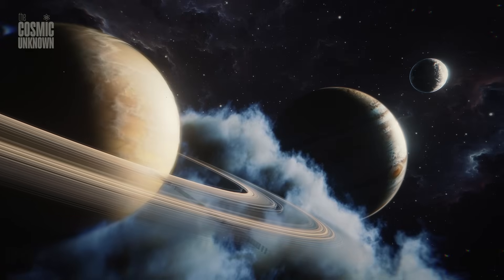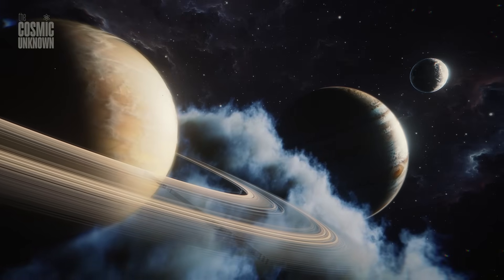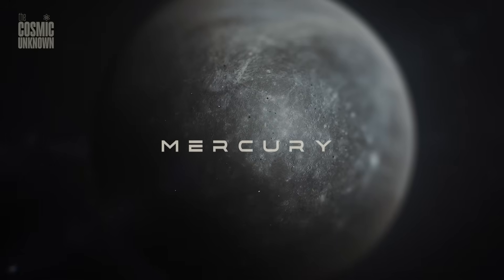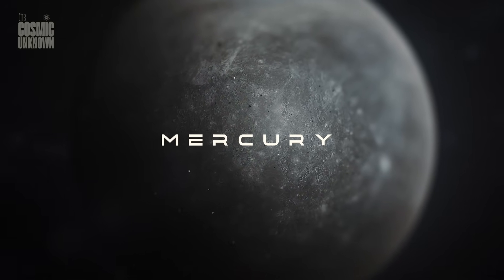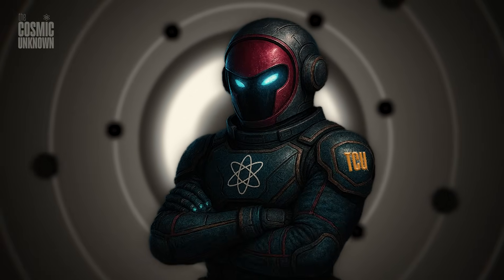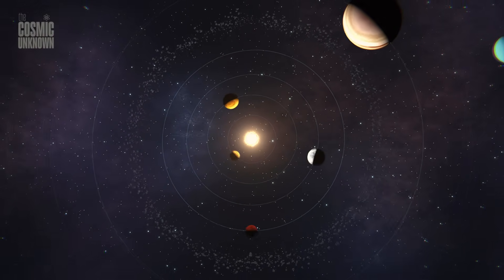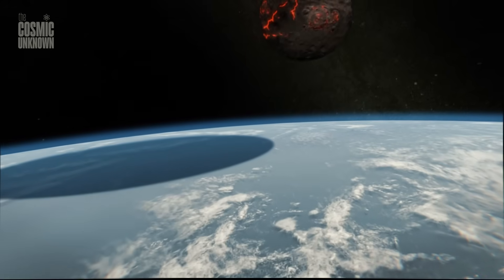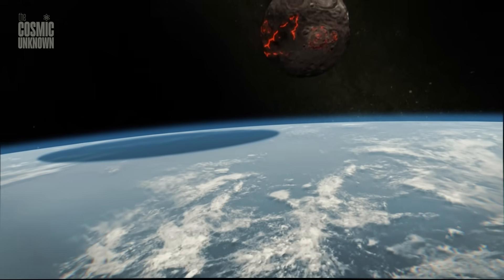July 15th, 2067. Two planets. One fast. One distant. Mercury. The closest to the sun. A scorched world of extremes. Neptune. The farthest. A frozen giant cloaked in blue storms. Separated by billions of kilometers. But on this day, they will appear to touch. A conjunction.